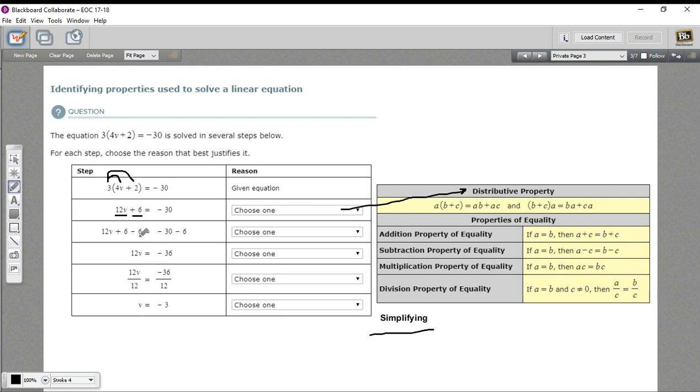The next thing they're doing here, you can see they're subtracting 6 from this side, and they're subtracting 6 from this side, and that makes sense because we've got this plus 6 here hanging out with the V term, we want to get rid of that. So you may be able to guess this already, but that is called the subtraction property of equality. You're subtracting, that's called the subtraction property.